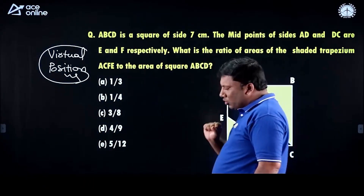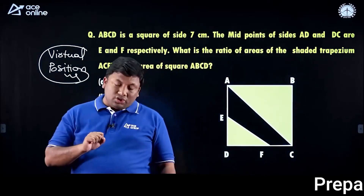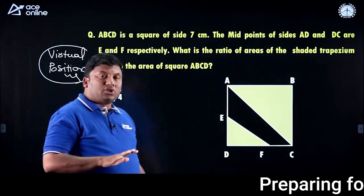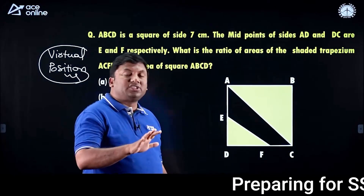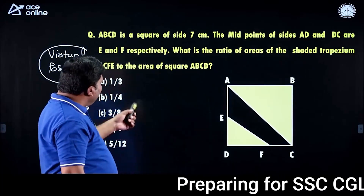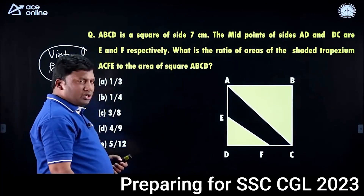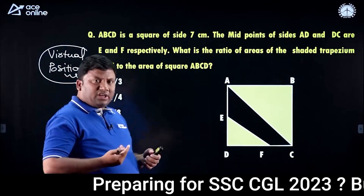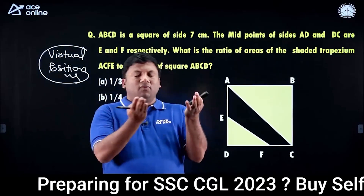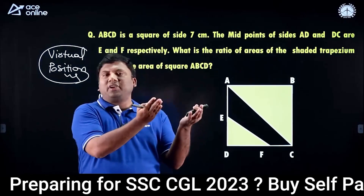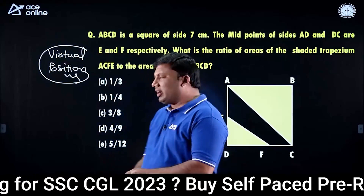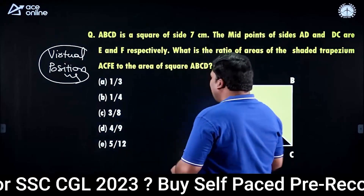See this question. I deliberately took questions from various topics. As you can see, this is a question from mensuration. In mensuration, there are two layers — one is a 2D figure and another is a 3D figure.